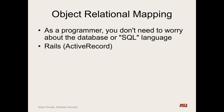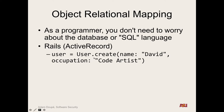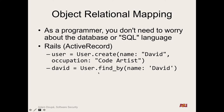Rails has Active Record. You can do things like `User.create` to create a new database entry with name 'David' and occupation 'Code Artist.' This is from the Rails documentation — from DHH, the guy who created Rails. You can query the database using the model: `User.find_by(name: 'David')` — no SQL, you treat the database as an incredibly dumb backend. The beauty is you can switch between SQLite, MySQL, or Postgres without ever changing your code.